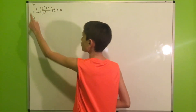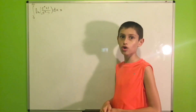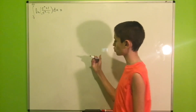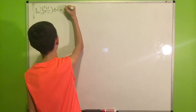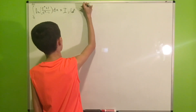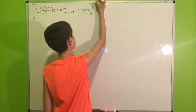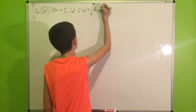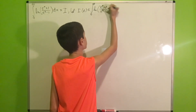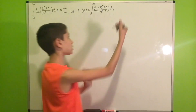Just as a reminder, here we have an integral from 0 to infinity of the natural log of (e^x + 1) / (e^x − 1). What we will do is call this integral I. Now we will define a function I(t) as the integral from 0 to infinity of the natural log of (e^x + t) / (e^x − 1). And then what we will do is differentiate this integral.